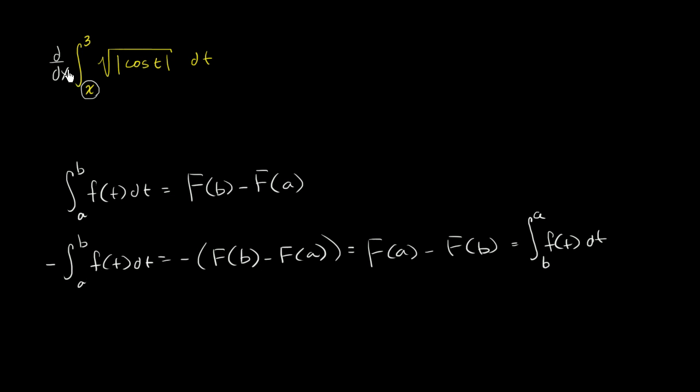So we can go back to our original problem. We can rewrite this as being equal to the derivative with respect to x of, instead of this, it'll be the negative of the same definite integral, but with the boundary switched. The negative of x, the upper boundary is x, the lower boundary is 3, of the square root of the absolute value of cosine t dt.